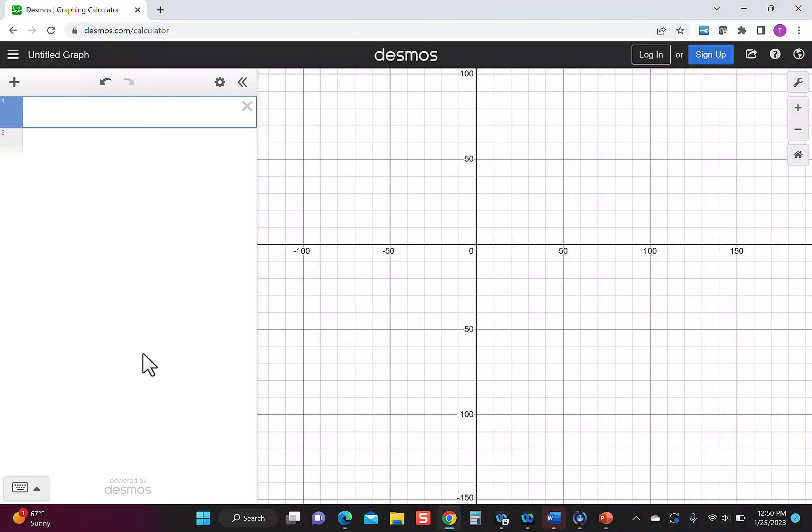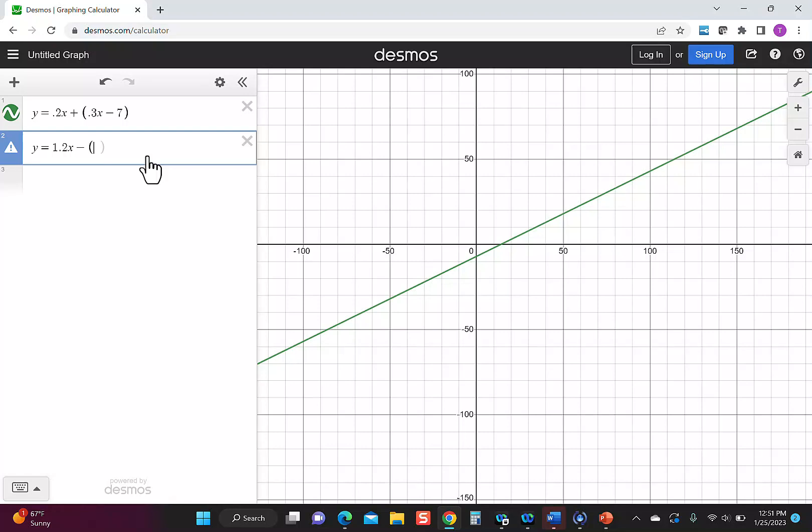We're going to put that into Desmos, so I'm going to type in y = 0.2x + (0.3x - 7), and then the right side of the equation is y = 1.2x - (2.7x - 8).